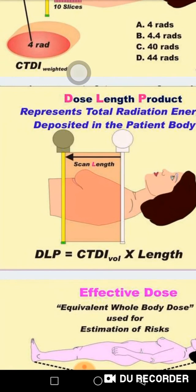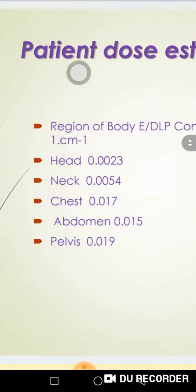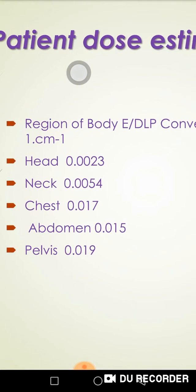After calculating the dose-length product, the last step is to calculate the patient's effective dose. The effective dose is always what you want in millisieverts. The effective dose is related to tissue sensitivity and weighting factors. For example, a chest examination and a brain examination might receive the same dose, but the sensitivity of the brain to radiation is different from that of the chest or pelvis. I multiply the DLP by the conversion factor to get the dose the patient received.